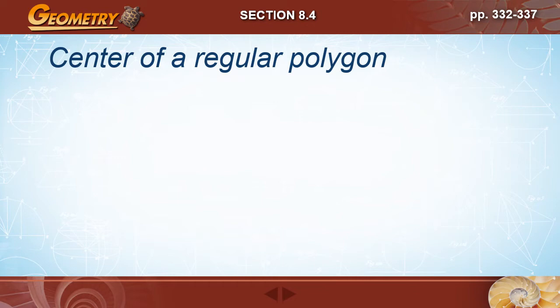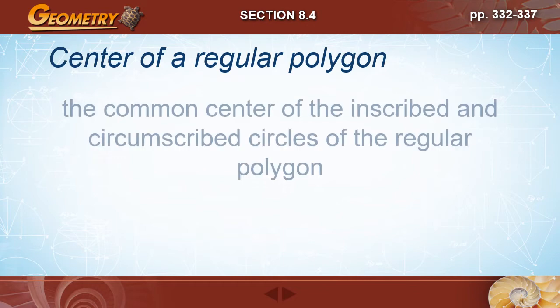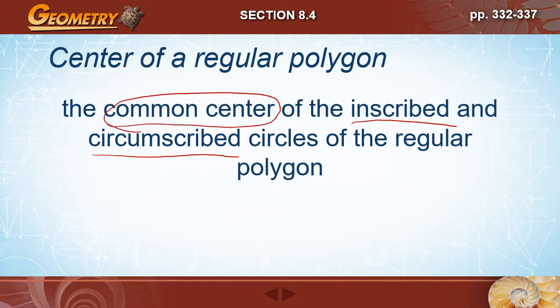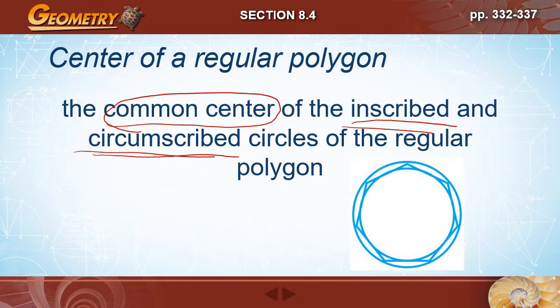The center of a regular polygon is the common center of the inscribed and circumscribed circles. They will always be the same center for a regular polygon. If it's an irregular polygon, that won't necessarily be the case.